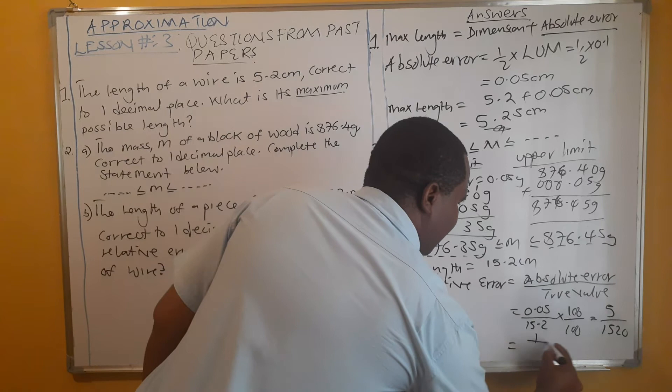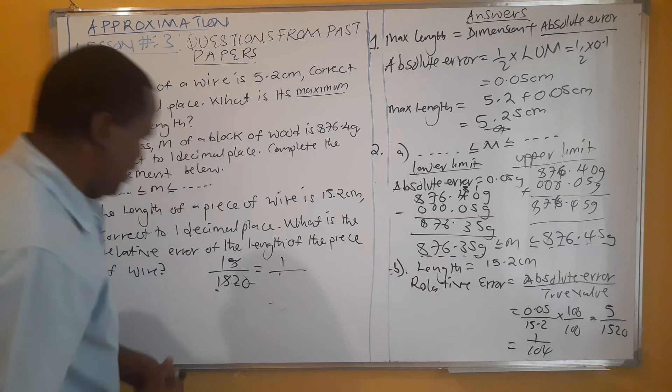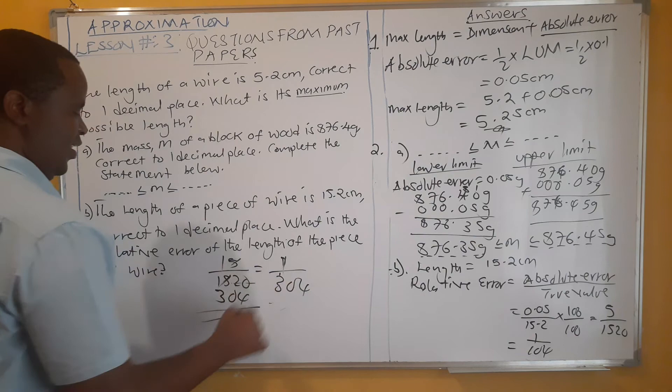Take note — we were a bit fast earlier. We said 5 into 5 is 1, but 5 into 15 is 3, not 1. So it needs to be corrected to 1 over 304. That is our final answer.